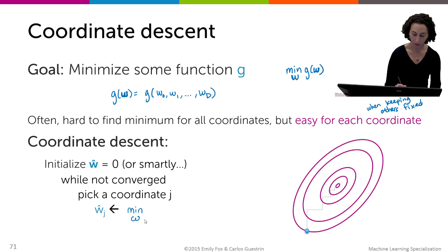So I'm going to search over all possible values of omega that minimizes g of w hat 0, dot dot dot, all the way to w hat j minus 1, comma, omega, comma, w hat j plus 1, all the way up to w hat d.